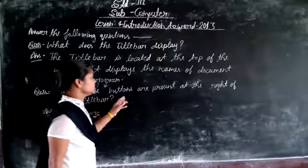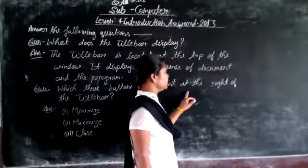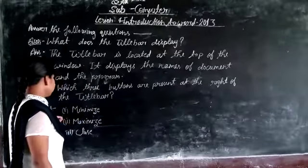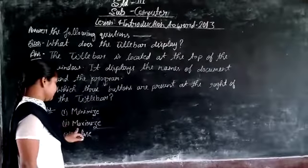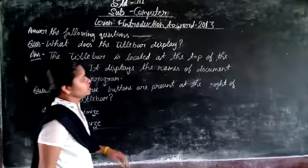Next question. Which three buttons are present at the right of the title bar? Answer: first minimize, second maximize, third close. And homework.